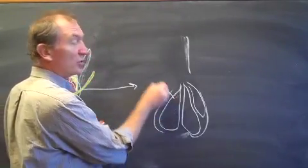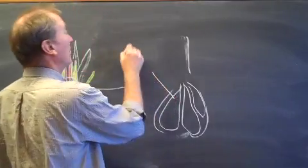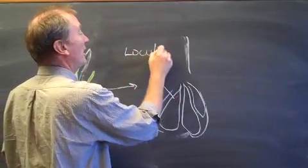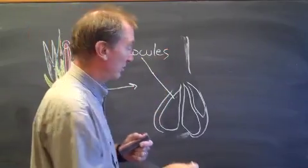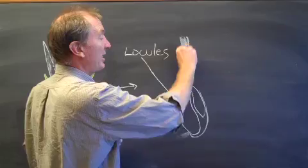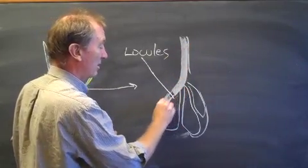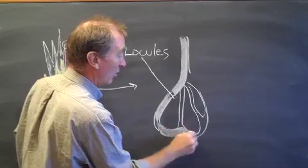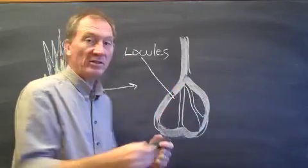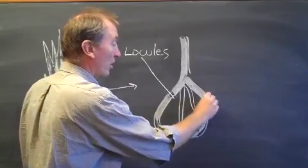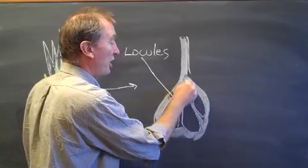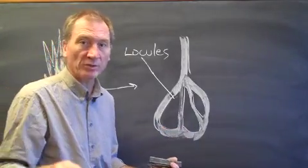These chambers are called locules, L-O-C-U-L-E-S, locules. So I'm going to put, just to make it easier to see, that's the solid outside wall of the carpal. Then we have these chambers inside, which are the locules.